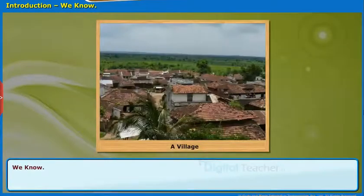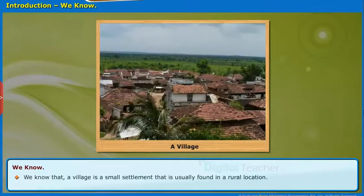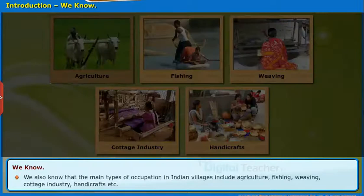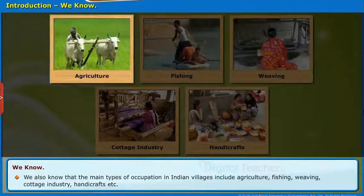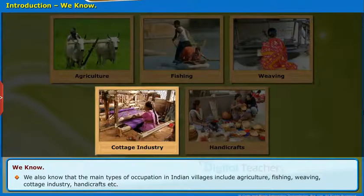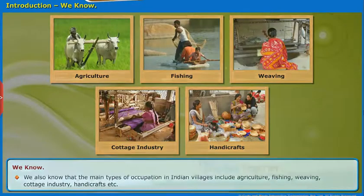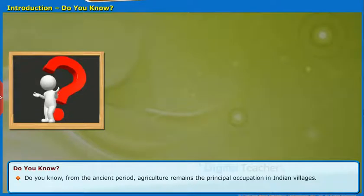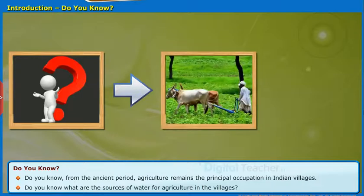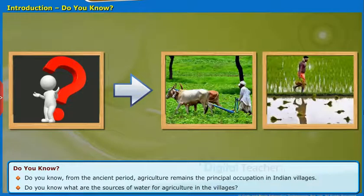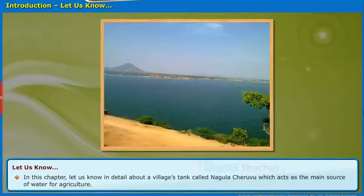Let us start with the introduction. We know that a village is a small settlement that is usually found in a rural location. The main types of occupation in Indian villages include agriculture, fishing, weaving, cottage industry, handicrafts, etc. From the ancient period, agriculture remains the principal occupation in Indian villages. In this chapter, let us know in detail about a village's tank and Nagula Chiruvu, which acts as the main source of water for agriculture.